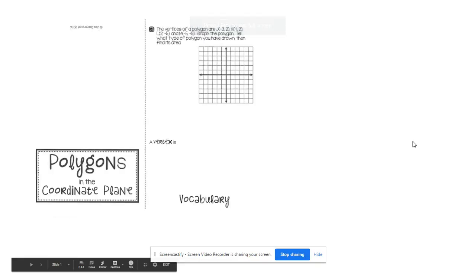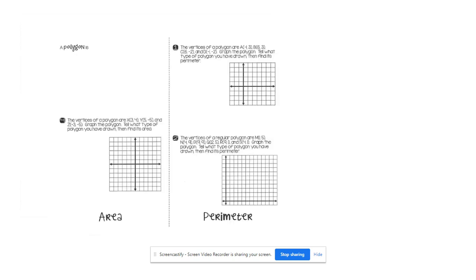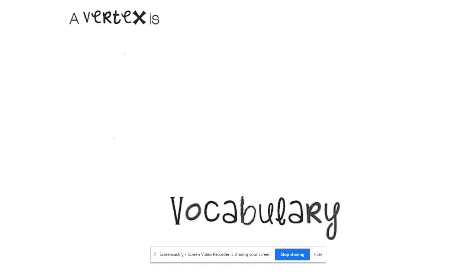Hello everyone. Today we are going to learn how to find the area and perimeter of polygons in the coordinate plane. We're going to do that using this foldable. It looks like this and then your other page should look like that.